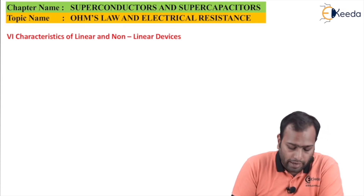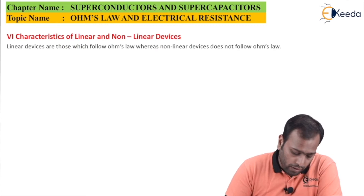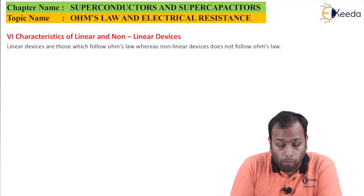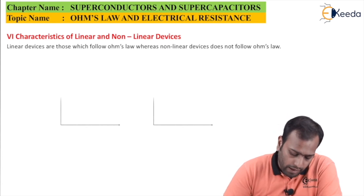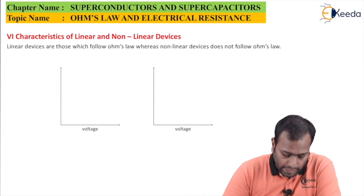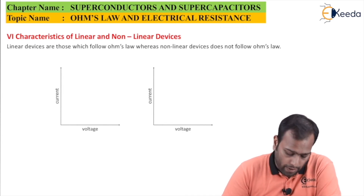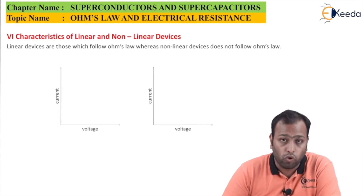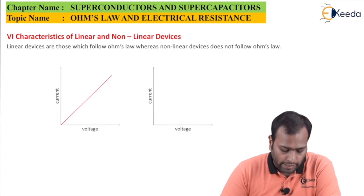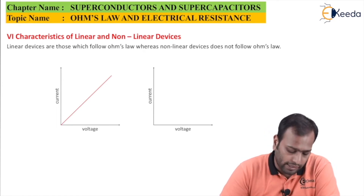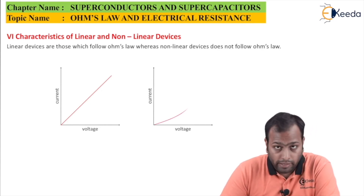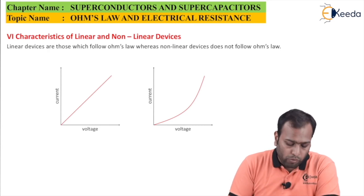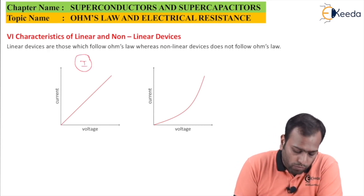Now, the V-I characteristics of linear and nonlinear devices: linear devices are those which obey Ohm's law, whereas nonlinear devices do not. Taking the voltage on the x-axis and current on the y-axis, for linear or Ohmic devices the graph is a straight line, meaning voltage and current show a direct relationship with a single constant slope.